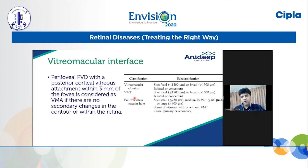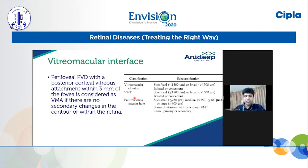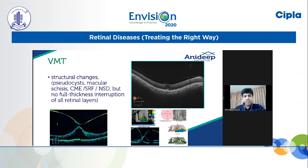Coming to common retinal diseases: the vitreo-macular interface consists of vitreo-macular adhesion, VMT, and full thickness macular holes. By international classification, the definition of VMA is perifoveal PVD with posterior cortical vitreous attachment within 3 mm of the fovea if there are no secondary changes in contour or within the retina. It can be classified into focal, broad, isolated, or concurrent. OCT helps us image VMA beautifully and explain to the patient when surgery is needed versus when we can wait and watch.